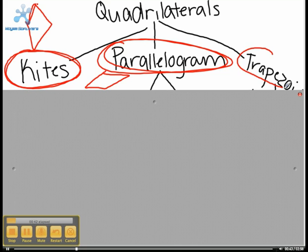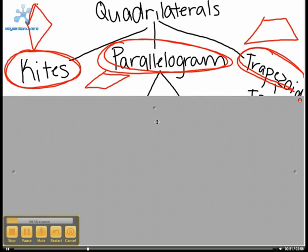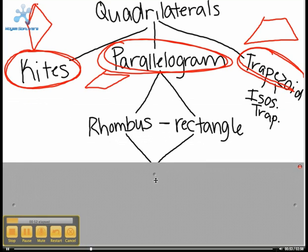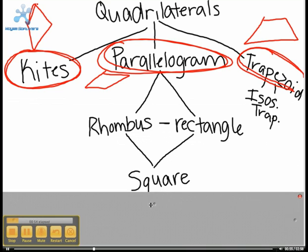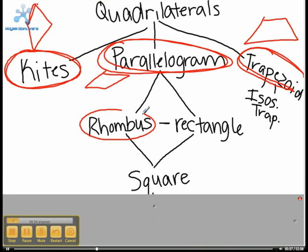Trapezoids have one set of parallel sides and one set of congruent sides. I think it's isosceles. And the rhombus has two sets of parallel sides, and all four sides are congruent.